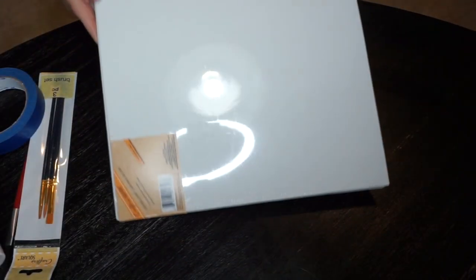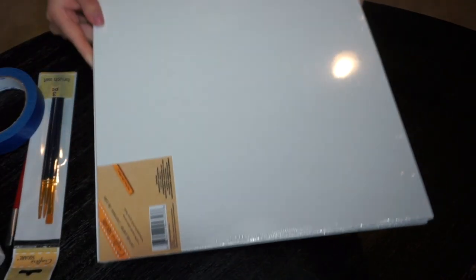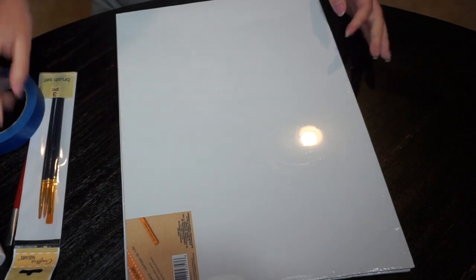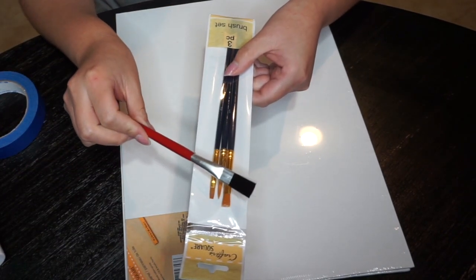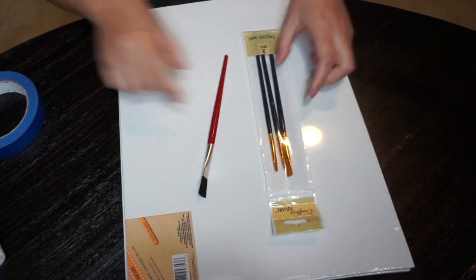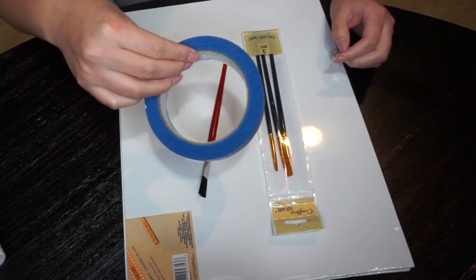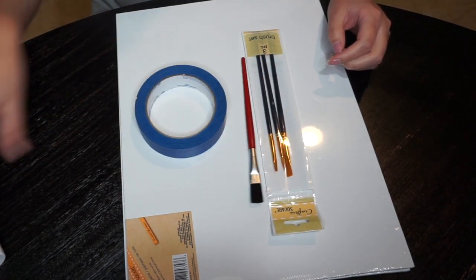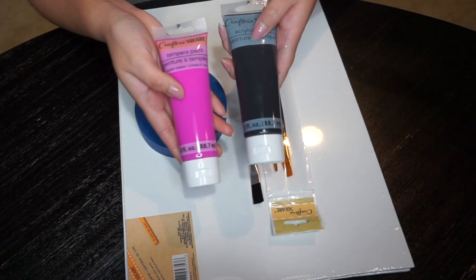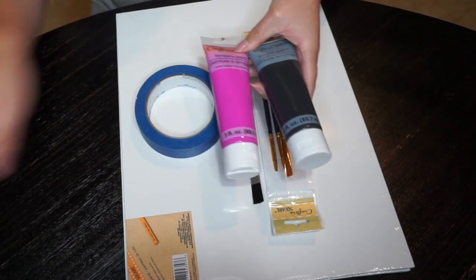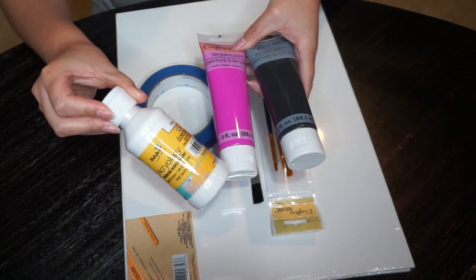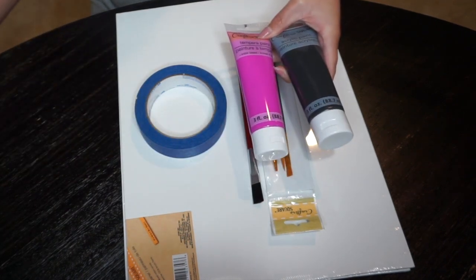The items we are going to need are these large canvases from Dollar Tree. We will also be needing some paintbrushes—Dollar Tree has lots of paintbrush options so there is a lot to choose from. We are going to need some painter's tape and the acrylic colors of your choice. I am choosing these black, pink, and white colors.